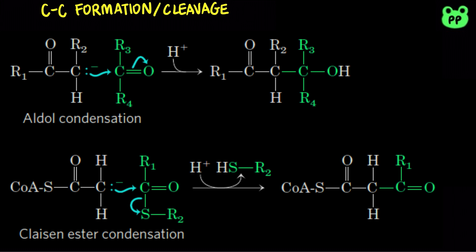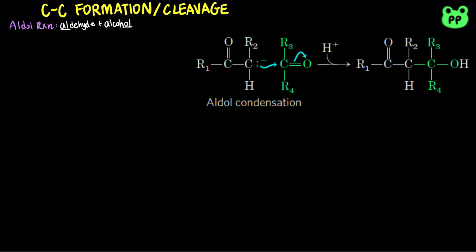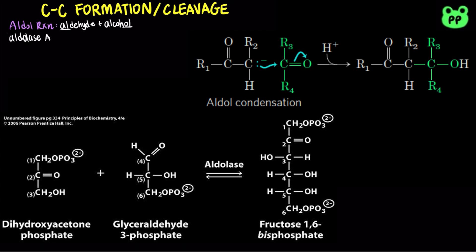For both the aldol condensation and the Claisen condensation, a carbanion serves as a nucleophile and the carbon of a carbonyl group serves as an electrophile. The aldolase reaction, which converts a six-carbon compound to two three-carbon compounds, is basically an aldol condensation in reverse. Aldolase A is a step in glycolysis, which cleaves fructose-1,6-bisphosphate into glyceraldehyde-3-phosphate and dihydroxyacetone phosphate.